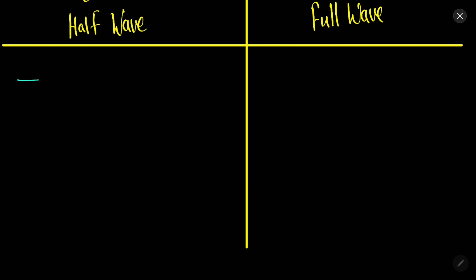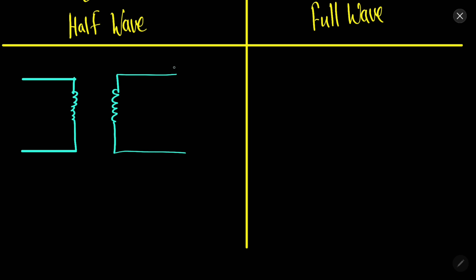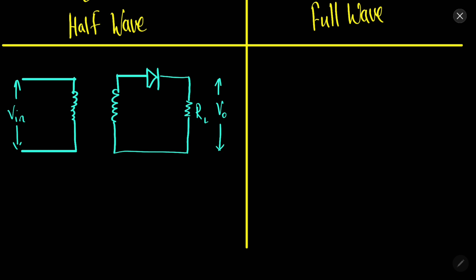The circuit will look like this for the half and full wave rectifier. We have a primary coil and a secondary coil. If we add a diode in the secondary coil circuit, we can obtain the output from the load resistance. The output voltage is obtained from across the load resistance, and we are giving an alternating input.